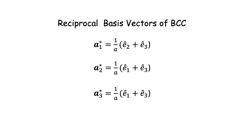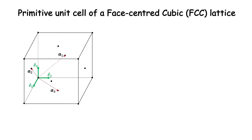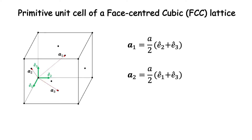We have now calculated the reciprocal basis vectors, but one more step of interpretation is required: what kind of lattice do these primitive basis vectors form? To do this, we compare with the primitive unit cell of the face-centered cubic lattice, worked out in another video linked in the description. The primitive unit cell vectors of an FCC lattice are: a1 = (a/2)(e2 + e3), a2 = (a/2)(e1 + e3), and a3 = (a/2)(e1 + e2). These appear somewhat similar to the reciprocal lattice vectors we have found.